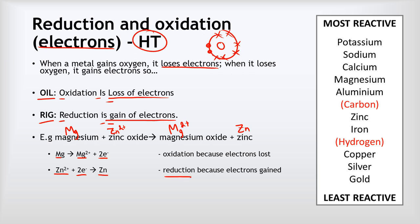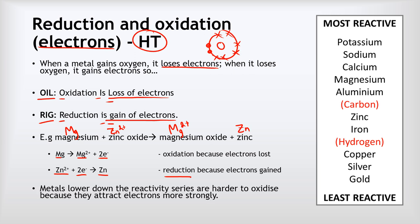Importantly, metals lower down the reactivity series are harder to oxidize because they attract their electrons more strongly. Looking at the reactivity series, the most reactive metals at the top are easiest to oxidize, and the least reactive ones at the bottom are hardest to oxidize because they grip their electrons more strongly.